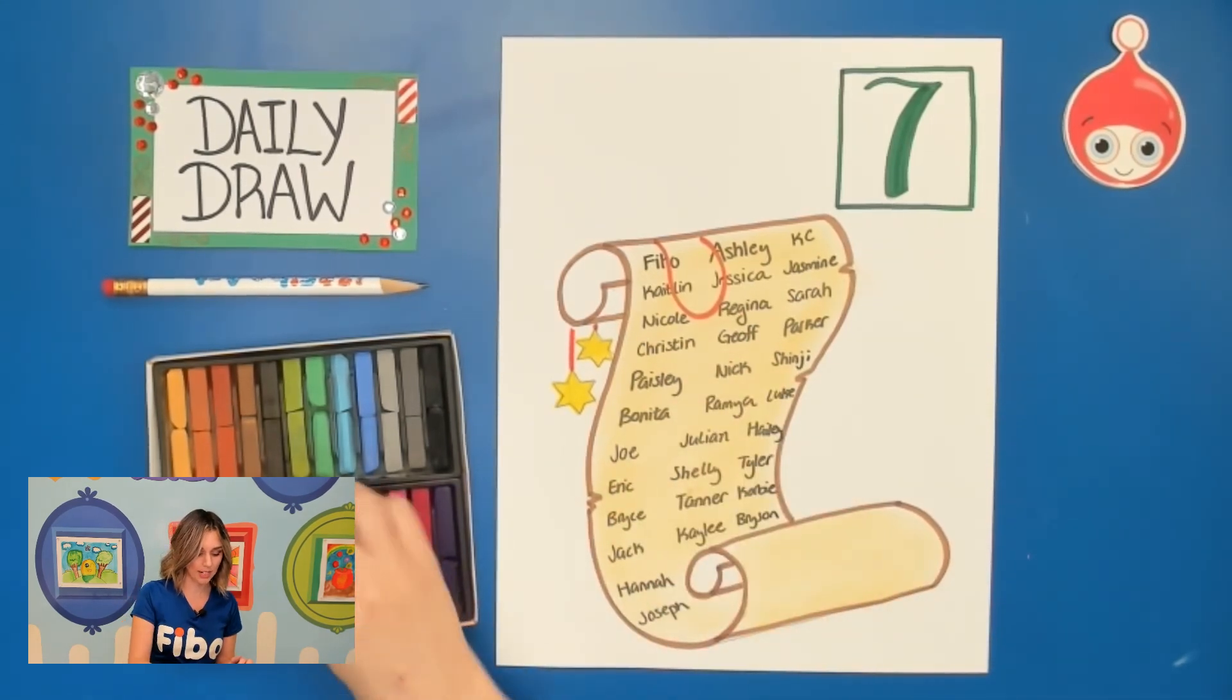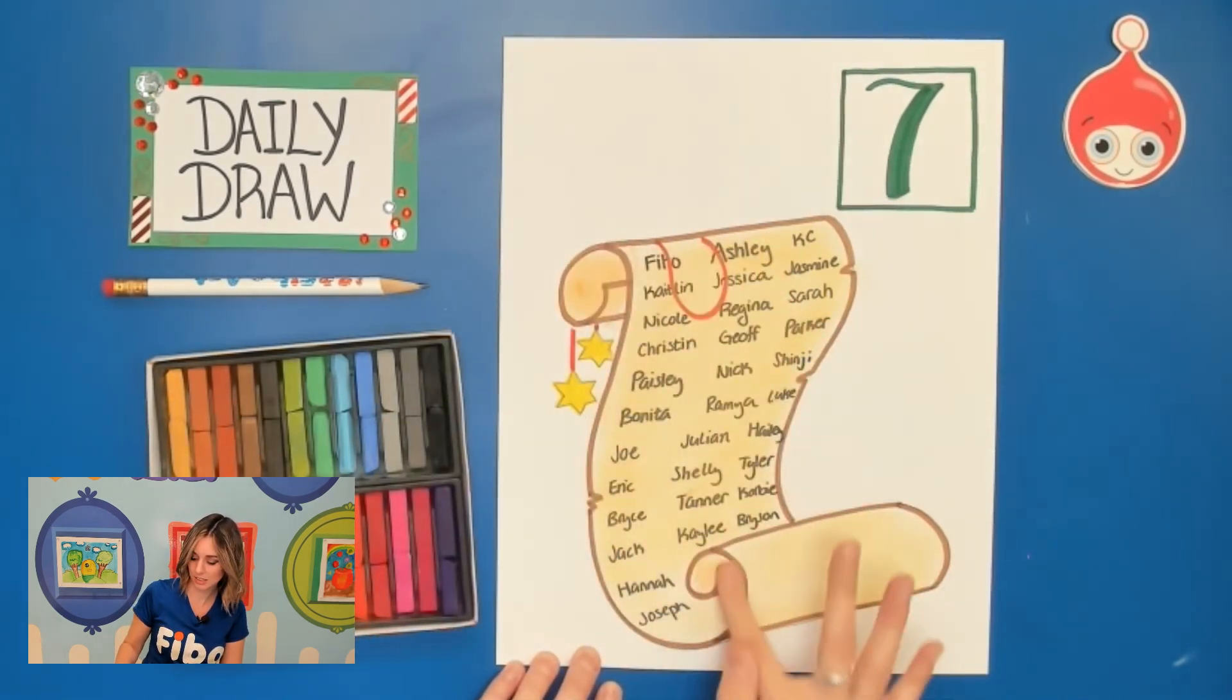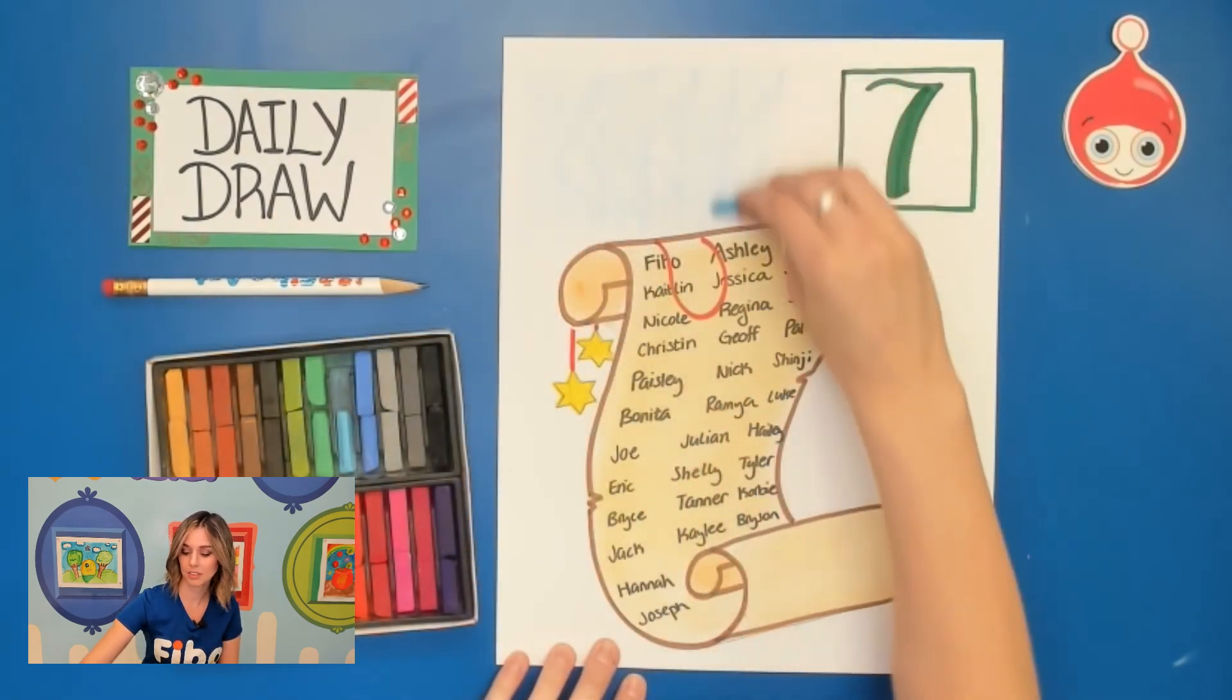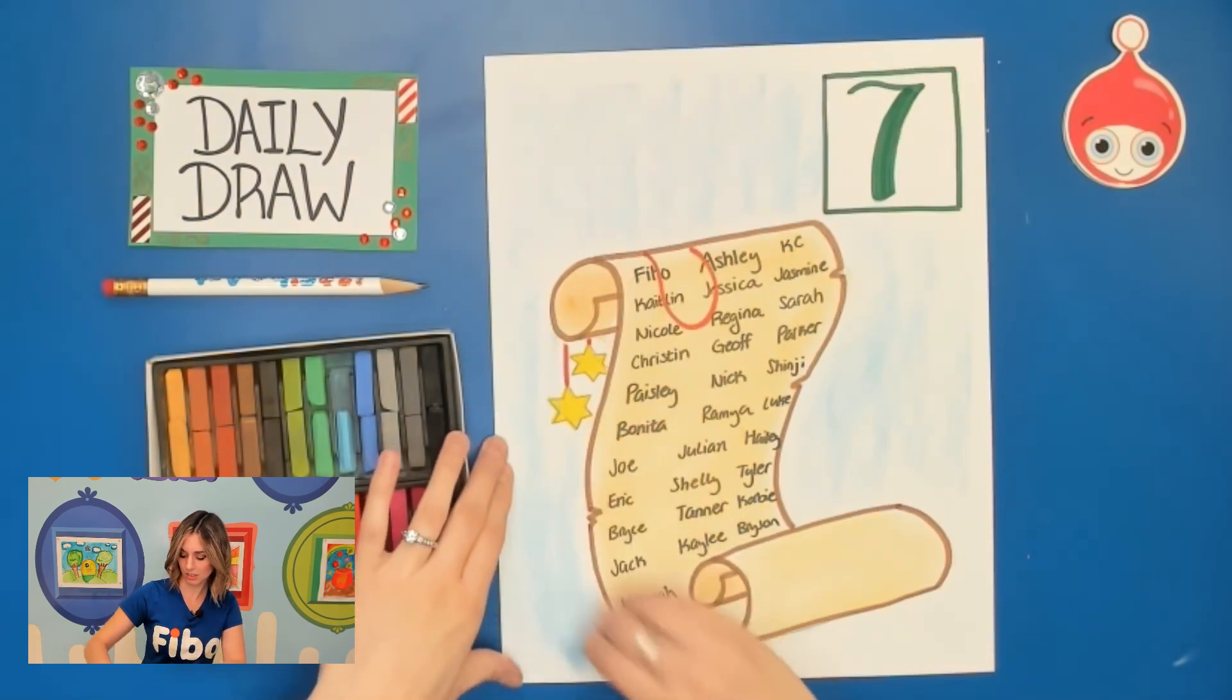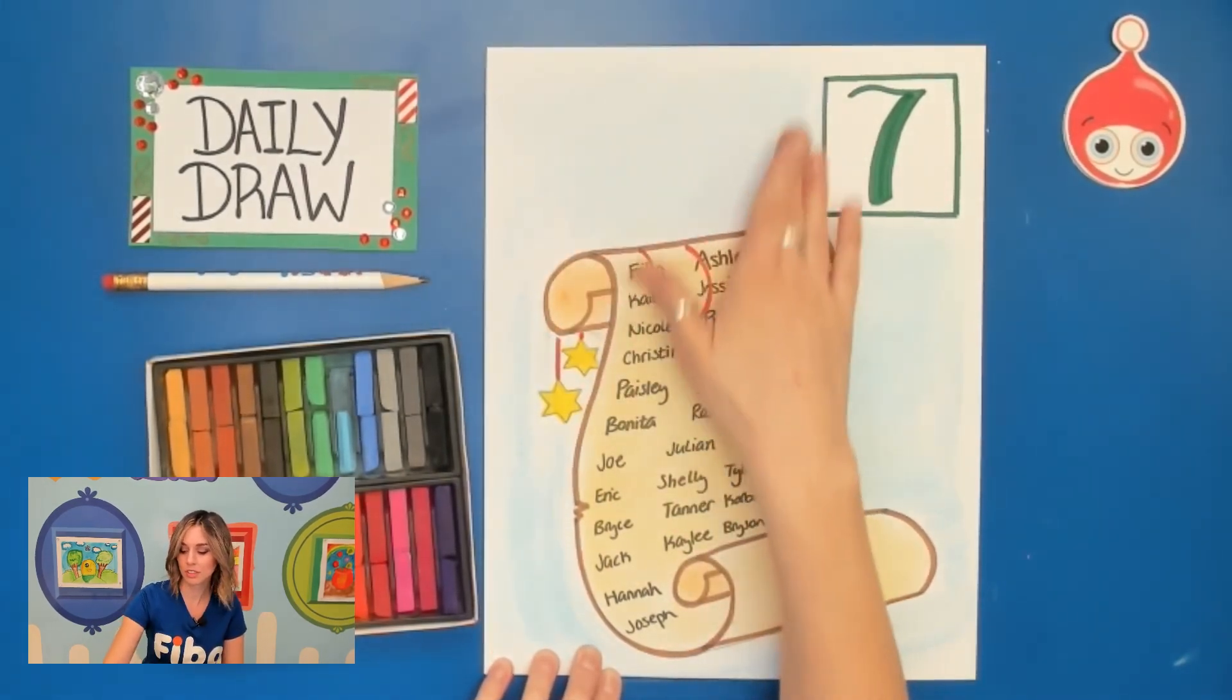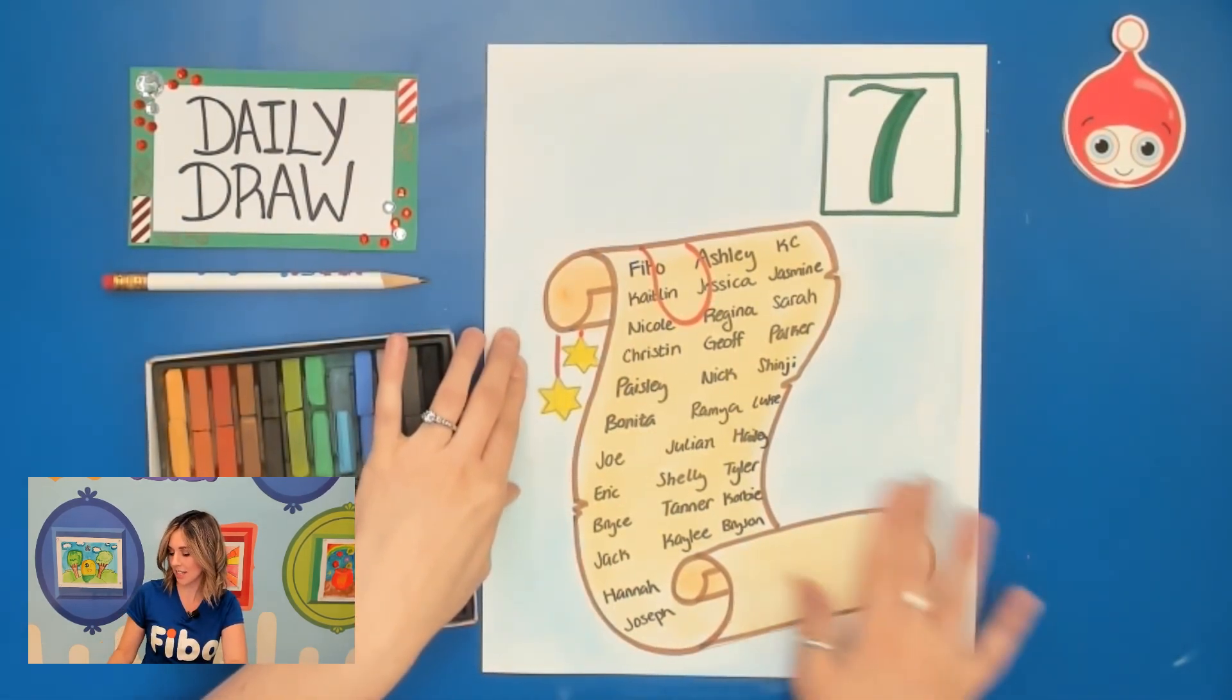Now what I need to do is I'm going to take my darker tan, so this one here, and I'm just going to fill in the rest of that with my darker tan and blend. And then when you're done, you can blend that light blue into the background. Just make sure you are getting as close as you can to Santa's list. And make sure everything is nicely blended together.